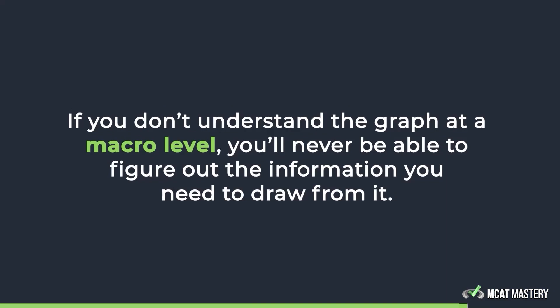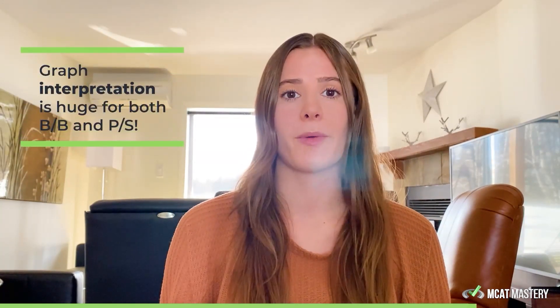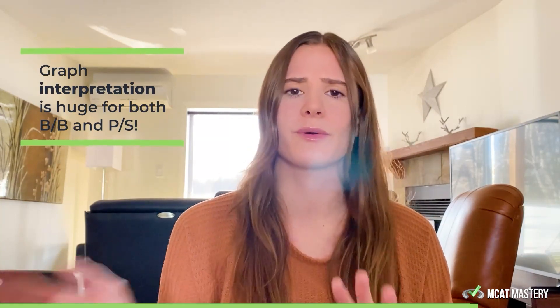Sometimes even the axes can be confusing — they'll use ten words to describe something. But if you don't understand at a macro level what the graph is measuring, you will never be able to draw the information you need from it. Graph interpretation is huge for bio biochem and also for psych/soc. If you're still confused after reading the axes, there's usually an explanation in the passage right above or below the graph — it'll say 'Figure 1' and give a brief description. Use that to figure out what is actually going on.